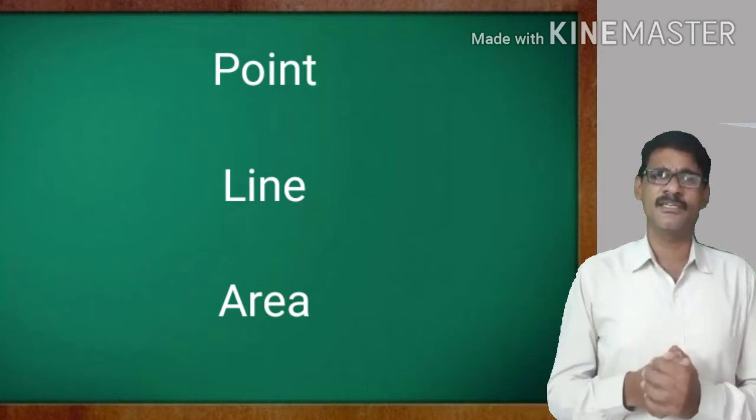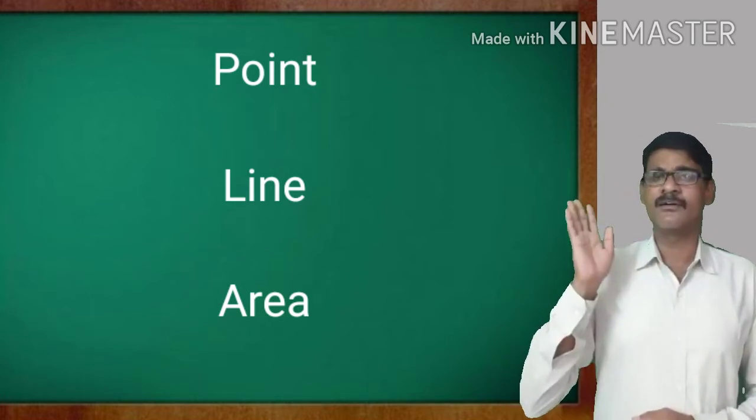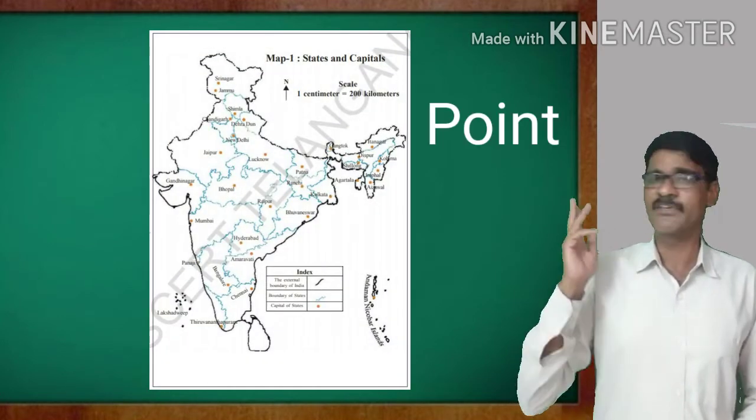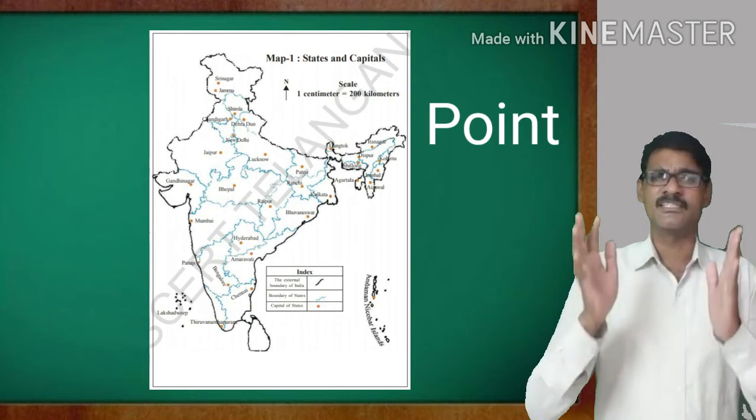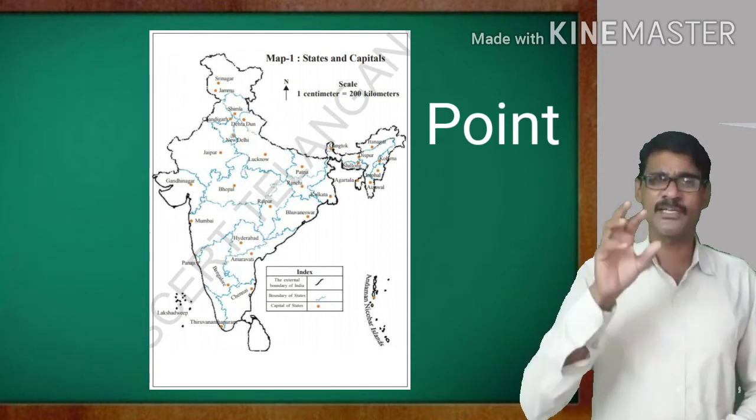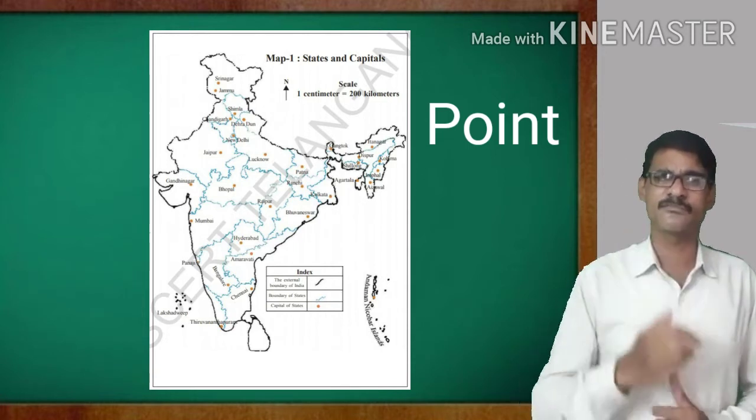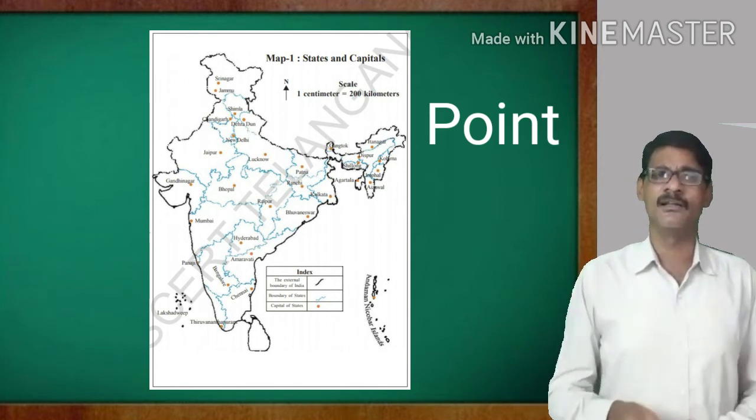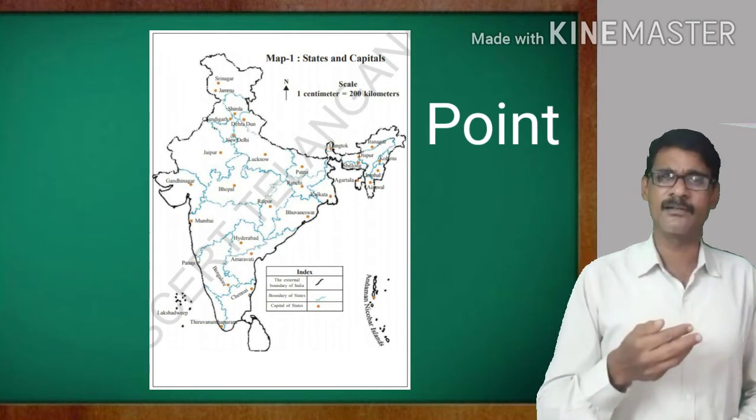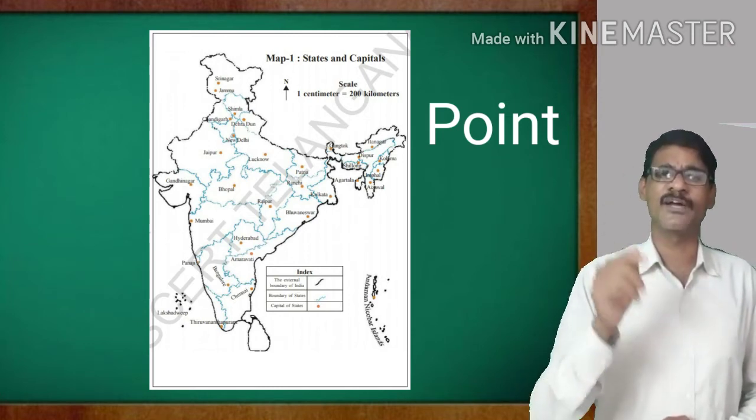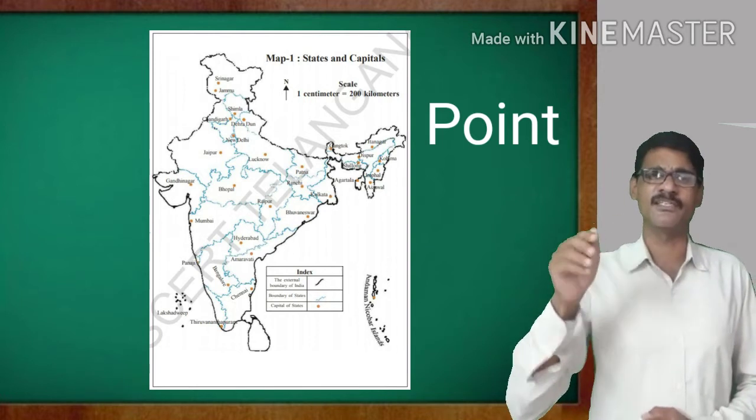The point symbol, generally, the Indian map, political map is given here. In this map, you can see the states and the different states are the different capital cities. We are locating that capital cities with the dot, point. So we are using the symbol, dot or point to indicate, to find out a city, or town, village, etc.